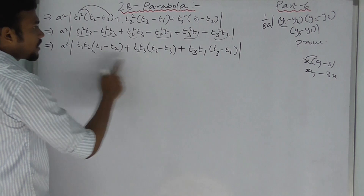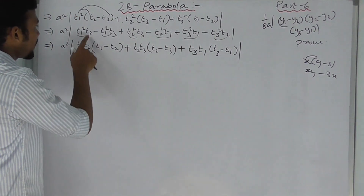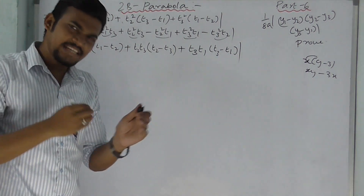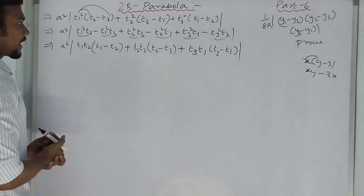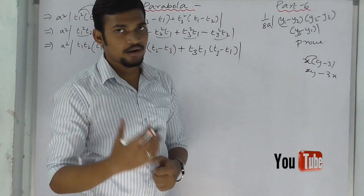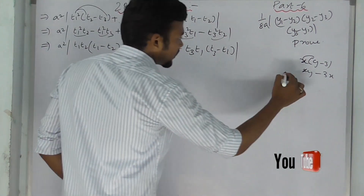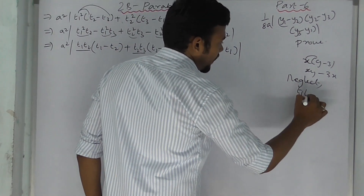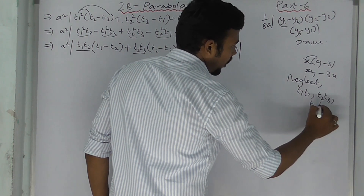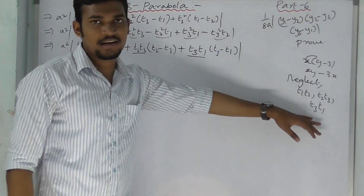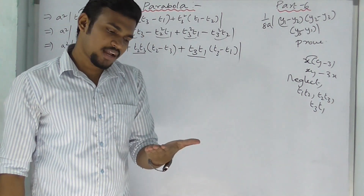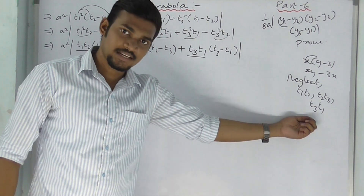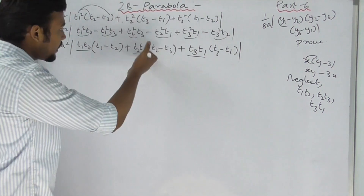Multiplying out: t1²·t2 − t1·t2² − t1²·t3 + t1·t3² + t2²·t3 − t2·t3². We can factor this expression. After factoring, we get (t1 − t2)(t2 − t3)(t3 − t1). Neglect intermediate steps and write the factored form.